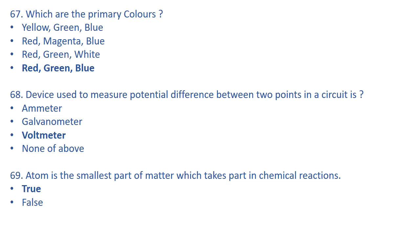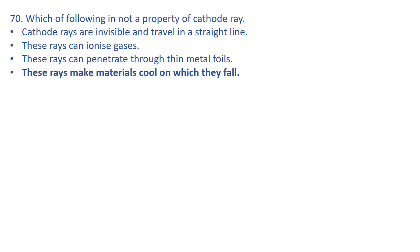Atom is the smallest part of matter which takes part in a chemical reaction — this is true. Which of the following is not a property of cathode rays? Cathode rays are invisible and travel in straight lines, they can ionize gases, and they can penetrate through thin metal foils. Option D — that these rays make materials cool — is not correct; they actually heat the material on which they fall.